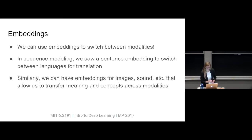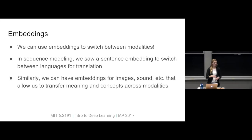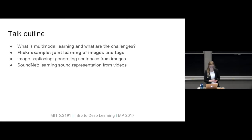In general, we can use embeddings to switch between modalities. In the sequence modeling lecture, we had a sentence embedding for a translation model: one model takes an English sentence and creates a sentence embedding, which is fed into another model that produces a French sentence. We can also use this to convert between different modalities — embeddings for images, audio, or any modality — and convert at a higher level of meaning.